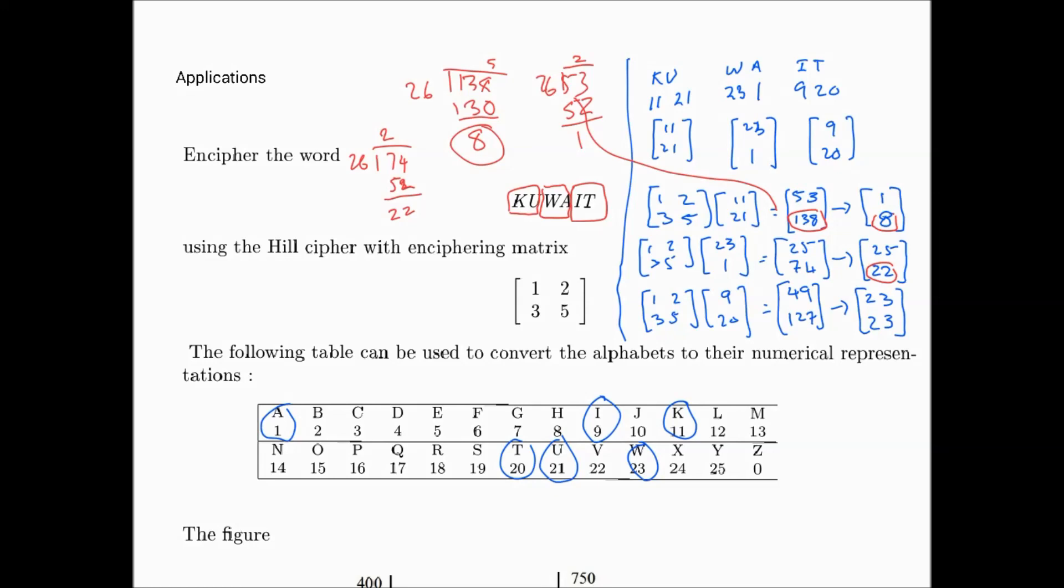Now that we have all the matrices, the last thing that remains is to convert them back. The [1, 8] is going to become A and H. So it's AH. Then [25, 22] is going to give us Y and V. And the last one, [23, 23], is going to be W and W. So that means the coded Kuwait becomes AHYVWW.